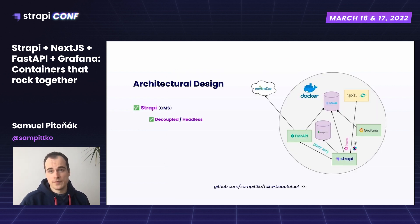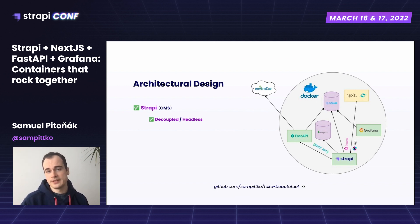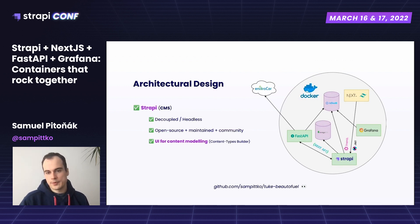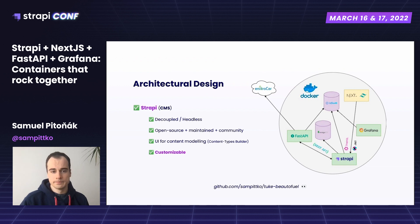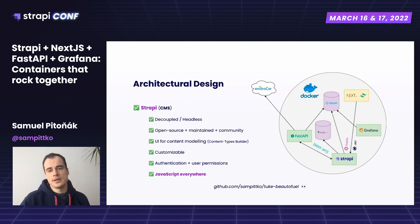When deciding on Strapi as the CMS, many reasons came into play. One was the decoupled nature of the CMS, which allowed me to choose how the presentation layer is implemented. It's open source, well maintained, and has an active community. It provides a UI for content modeling, so I expected it to help me move fast toward business logic implementation. It's also highly customizable, offers an authentication layer with user permission management and access control policies, and I write JavaScript everywhere, which is beneficial.